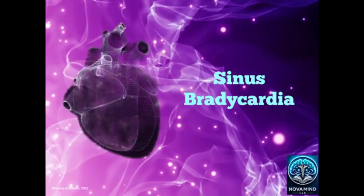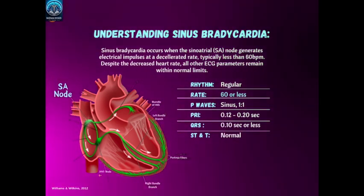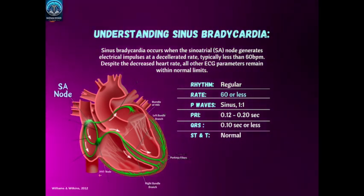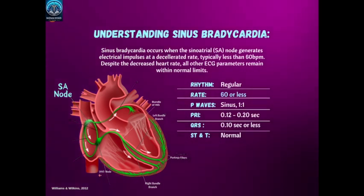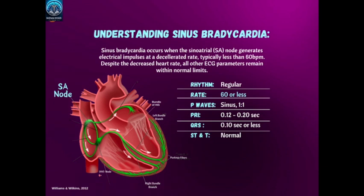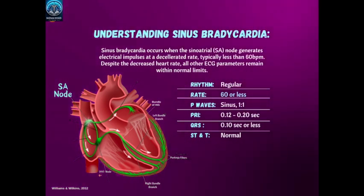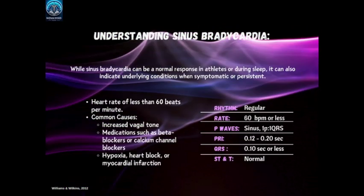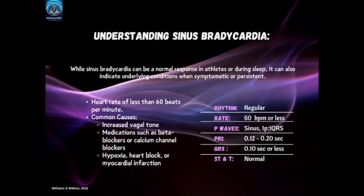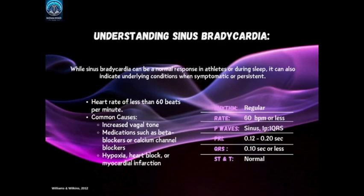Our next sinus arrhythmia is sinus bradycardia. Sinus bradycardia occurs when the SA node generates electrical impulses at a decelerated rate, typically less than 60 beats per minute. Despite the decreased heart rate, all other ECG parameters remain within normal limits. The rhythm is regular, the rate is 60 beats per minute or less, with sinus P waves preceding each QRS, a PR interval of 0.12 to 0.20 seconds, a QRS duration of 0.10 seconds or less, and normal ST and T waves. Common causes include increased vagal tone, medications such as beta blockers or calcium channel blockers, hypoxia, heart block, or myocardial infarction.